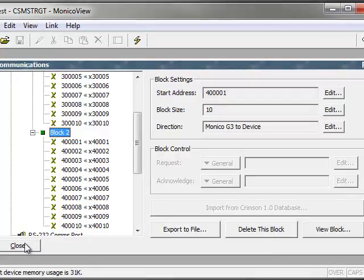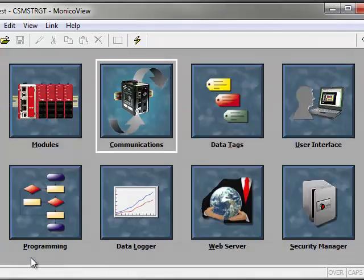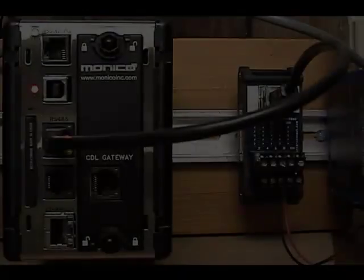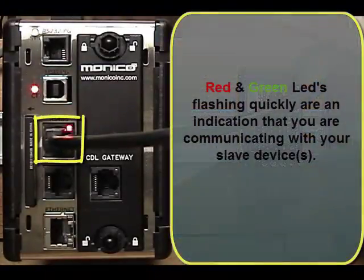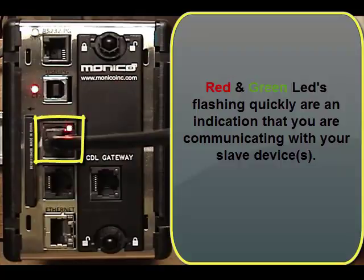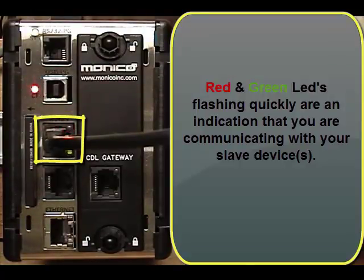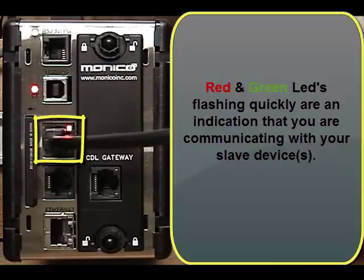If you're not connected to the gateway and you don't have MonacoView open, you can look at the LEDs on the top of the gateway and determine whether or not you have communications with the device. In this example, you'll see the red and green LEDs alternate, and they're going very fast — they're getting data. The green is us sending out a request; the red is us getting the data back. This is a good indication that you've got communications with your device or devices and that you are getting data.